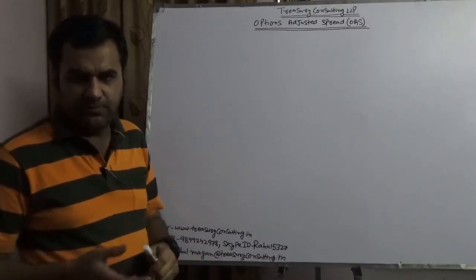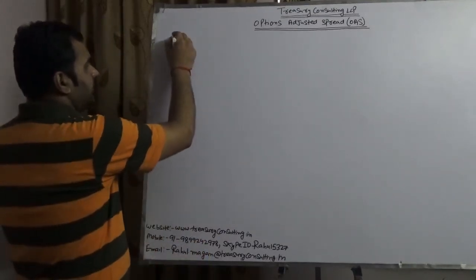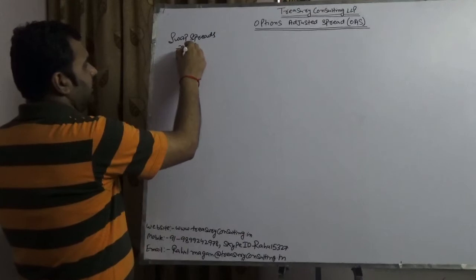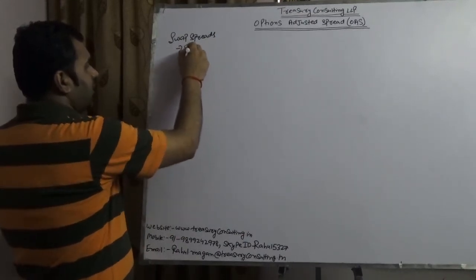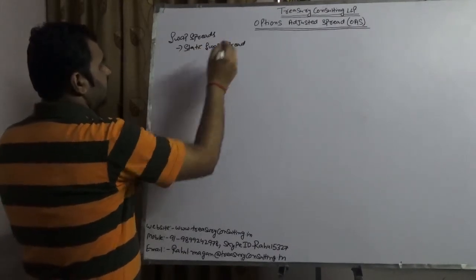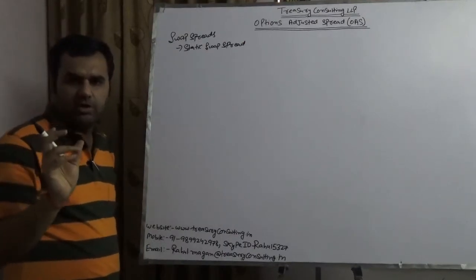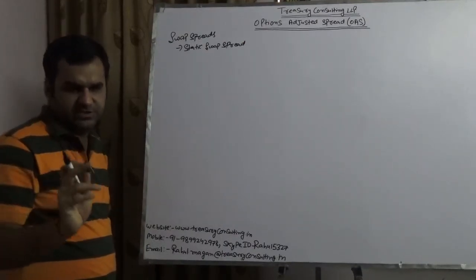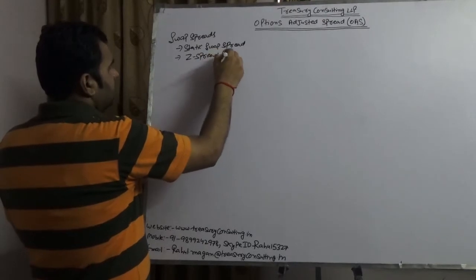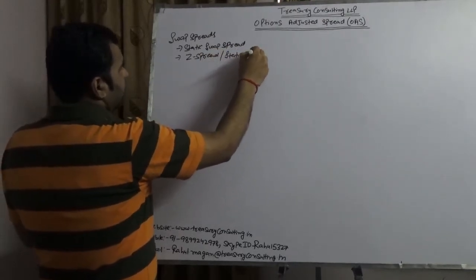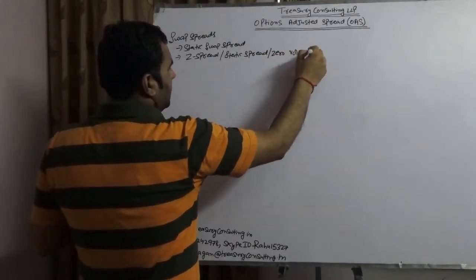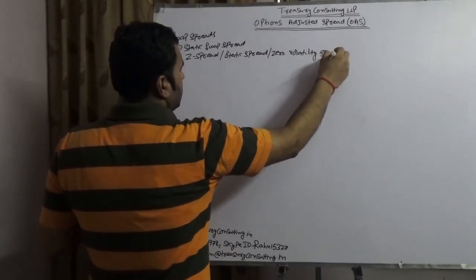But before starting this video, let me tell you the concept of swap spread. There are three kinds of swap spreads. First is static swap spread, which is nothing but the difference of a relative corporate bond or security with the risk-free security, which is treasury. Another is Z-spread, also known as static spread and sometimes known as zero volatility spread.